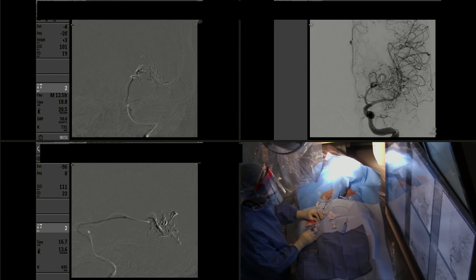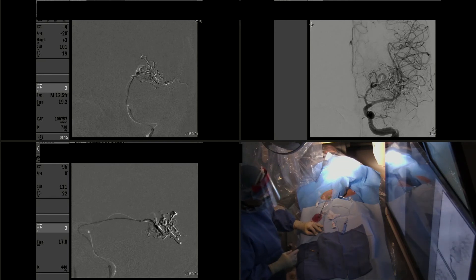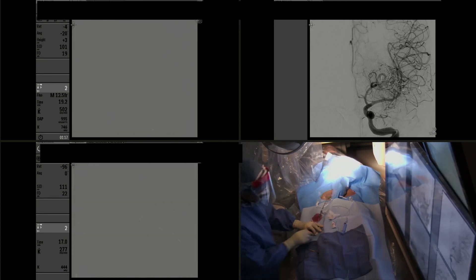You can see that now we're pulling the microcatheter out of the Onyx cast. We perform gentle traction to remove the microcatheter, but you see how the DAC, the intermediate catheter, has tracked over the microcatheter all the way distally into the middle cerebral artery. This gives us more support to pull the microcatheter. That was the main reason for using the distal access catheter as an intermediate catheter.